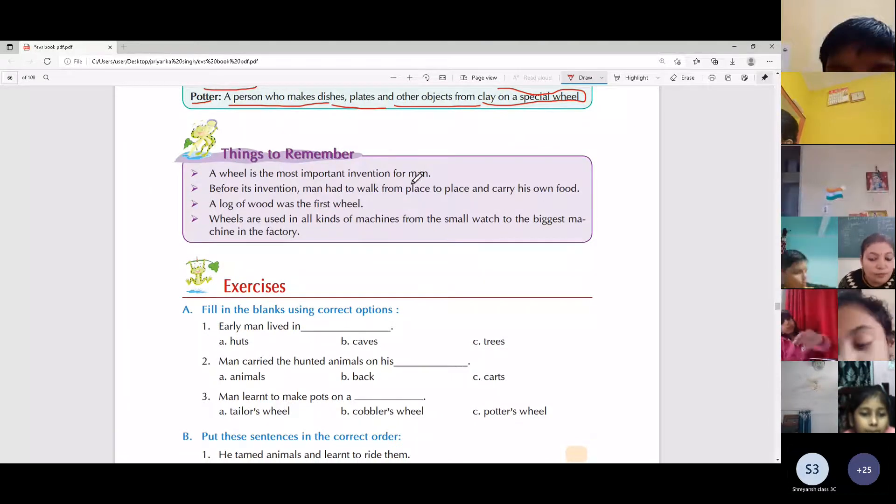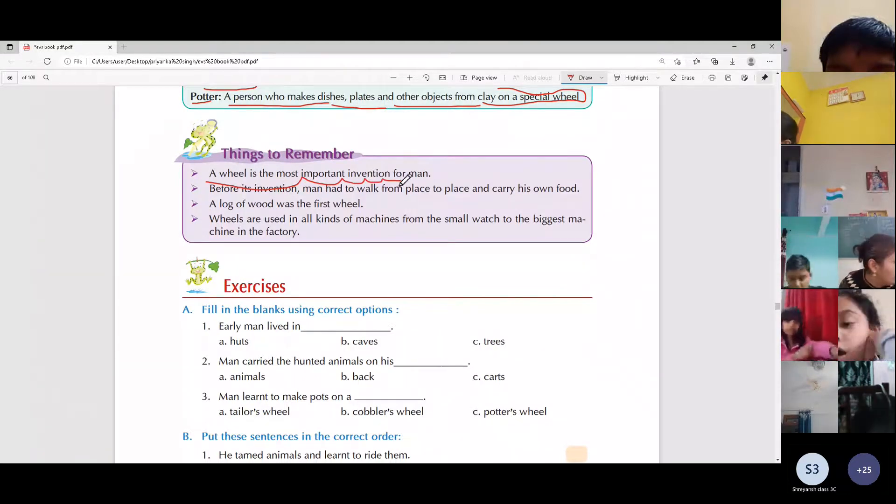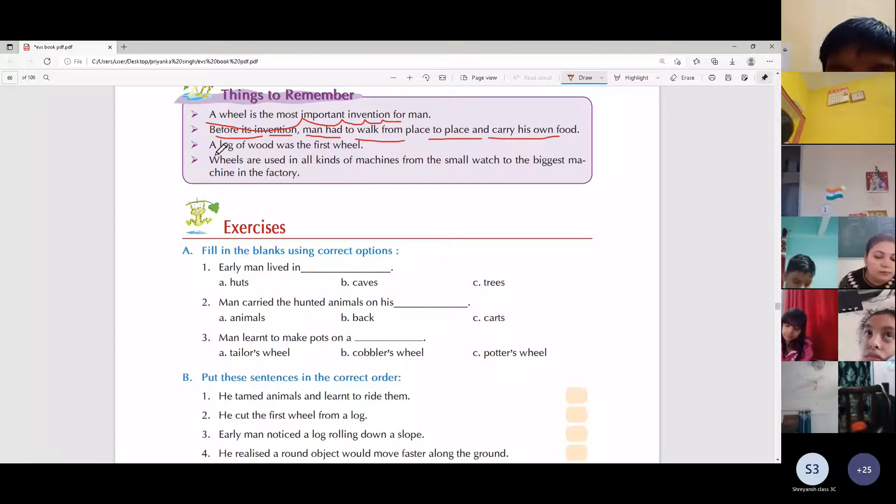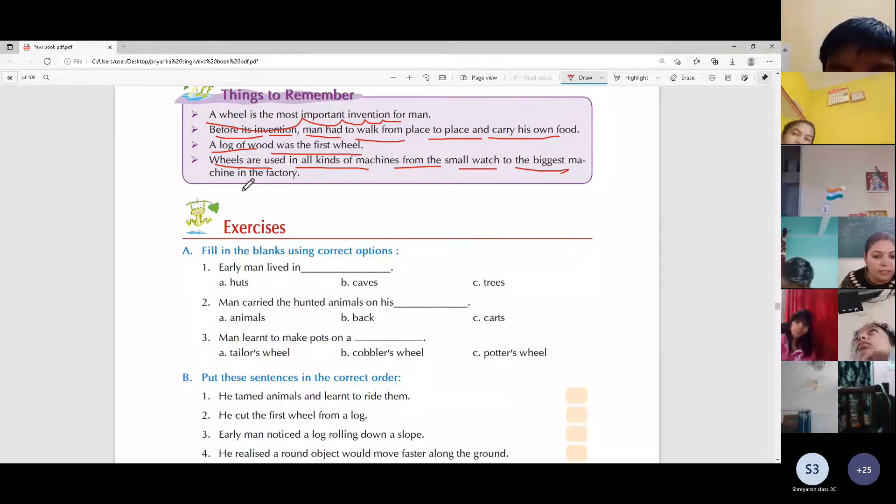Things to remember. A wheel is the most important invention for man. Before its invention, man had to walk from place to place and carry his own food. A log of wood was the first wheel. Wheels are used in all kinds of machines from the small watch to the biggest machine in the factory.